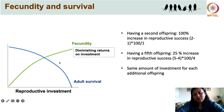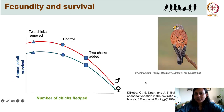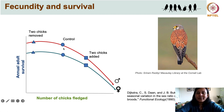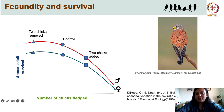Adult survival decreases steadily as energy is diverted to reproduction, so we see that adult survival decreases as fecundity — the number of eggs produced — increases. This has been confirmed using experimental studies. For kestrels, when two additional chicks were added to the nest for both males and females, annual adult survival declined. Whereas when two chicks were removed from the nest, adults had to invest less in parental care, and this increased annual adult survival for both male and female parents.